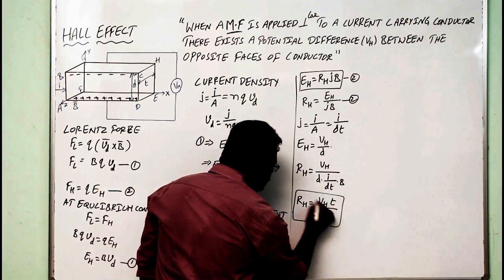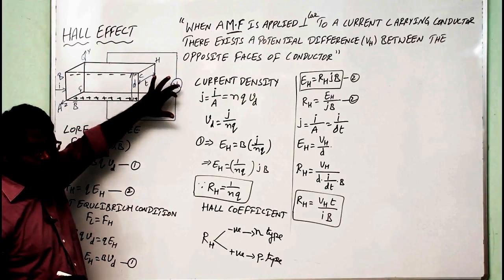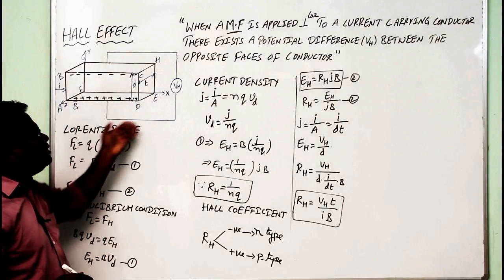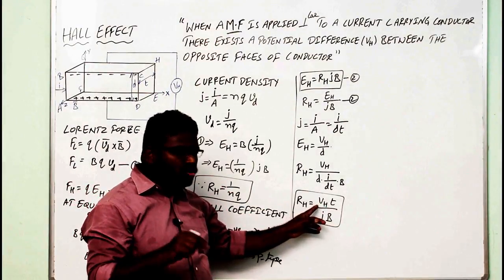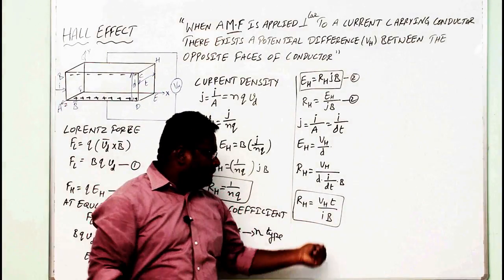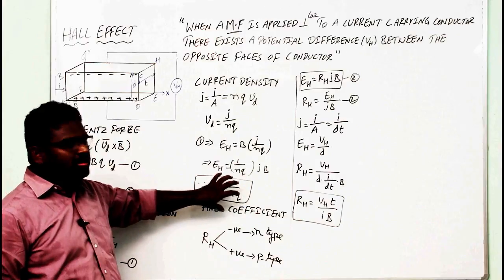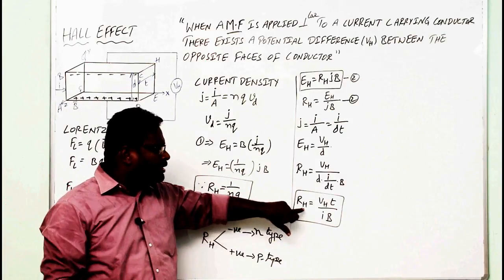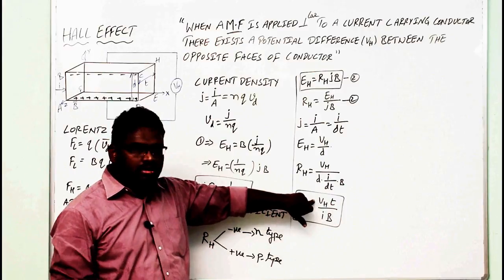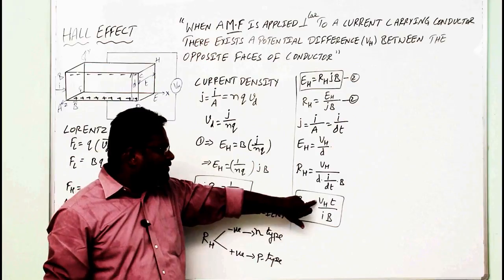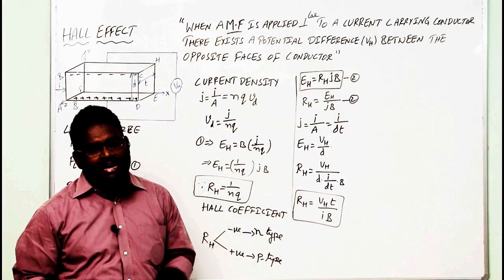So now, V_H is the Hall voltage — by placing a multimeter on the two opposite faces, one can measure the voltage and see whether it is positive or negative (top to bottom or bottom to top). T is the thickness — a known factor. V_H is a known factor. I is the current that we are applying — a known factor. B is the magnetic field we are applying — a known factor. In this practical equation, we can calculate the value of R_H. If R_H is positive, then it is a p-type semiconductor. If V_H is negative and R_H is negative, then it is an n-type semiconductor. By this method, one can determine whether the material is of n-type or p-type semiconductor.